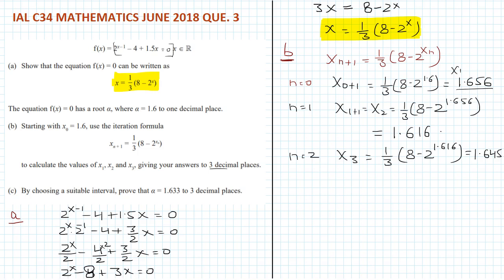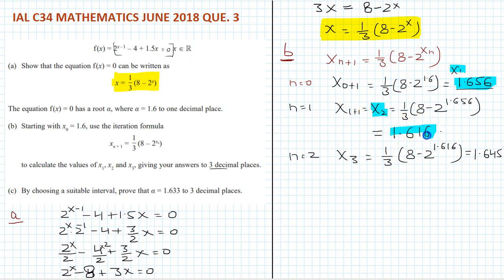So these are the values from the iteration: x₁ equals 1.656, x₂ equals 1.616, and x₃ equals 1.645.